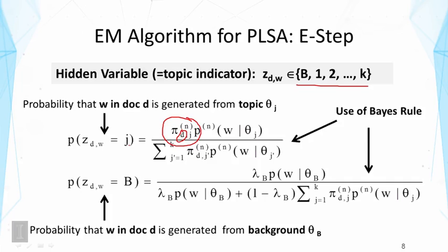In both cases, we are using the Bayes rule, as I explained, basically assessing the likelihood of generating word from each distribution and then just normalize.